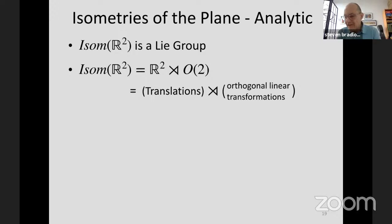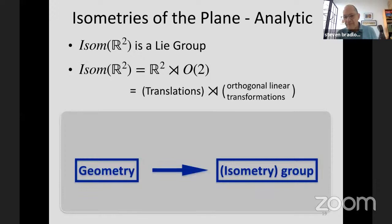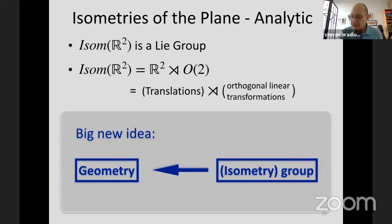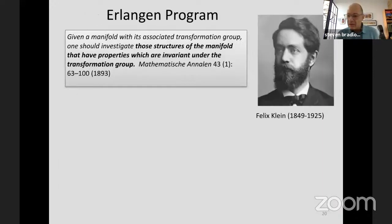This in itself is perhaps a nice high point for a course, but it's also an opportunity to introduce an idea which drastically changes our view of geometry in a very fruitful way. We started with Euclidean geometry and deduced from it the isometry group. The new idea, introduced by Felix Klein over 100 years ago, is to reverse the arrow: instead of deducing the isometry group from the geometry, we make the group the central object and regard the geometric features as those preserved by the action of the group elements. This approach is known as the Erlangen program.